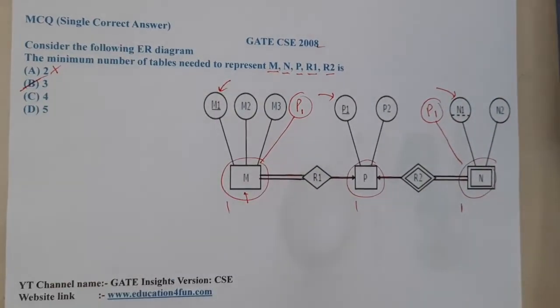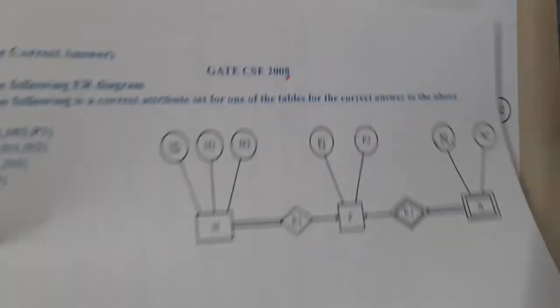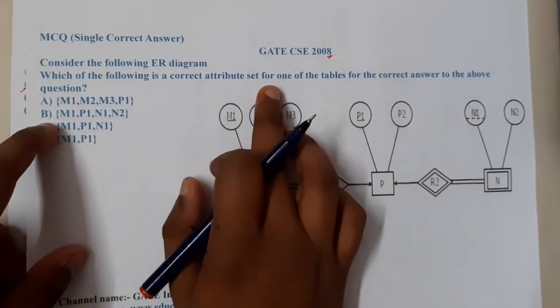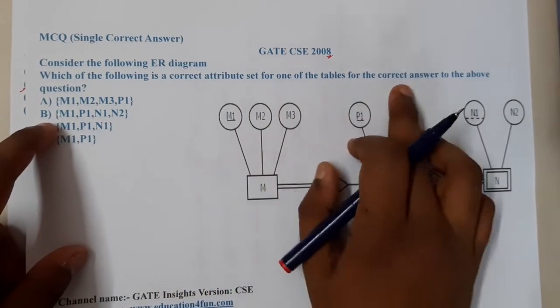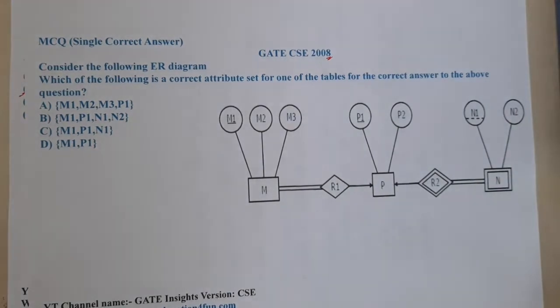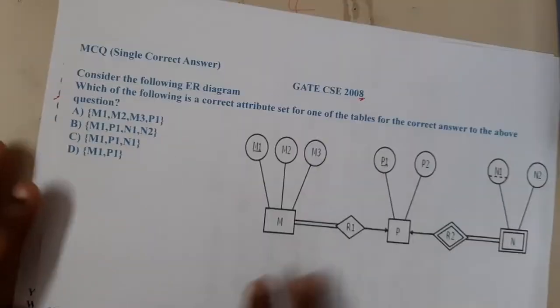Now in the next question, what did they ask? They are asking which of the following is a correct attribute set for one of the tables for the correct answer to the above question. So now they are asking among these tables, these are the attributes which you have finally wrote.